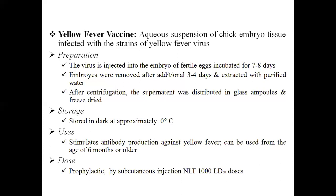The embryos are pooled in batches, then ground and extracted with purified water. The suspension is prepared, centrifuged, and the supernatant liquid is separated. A suitable preservative is added to the supernatant, which is then distributed into sterile glass ampoules and freeze dried.